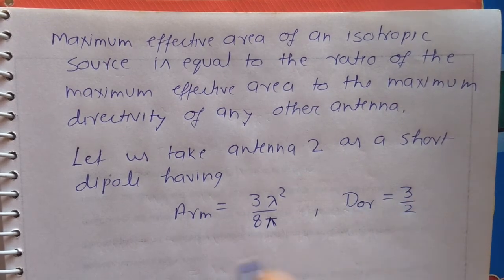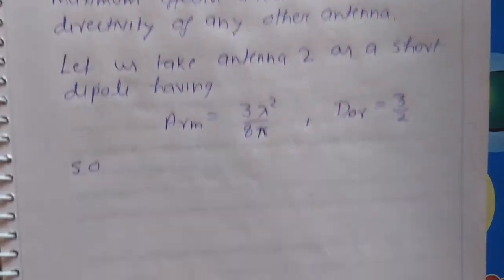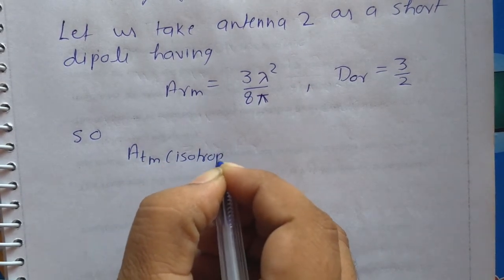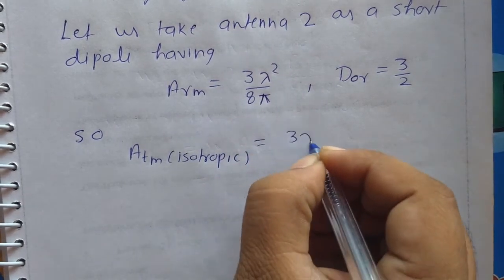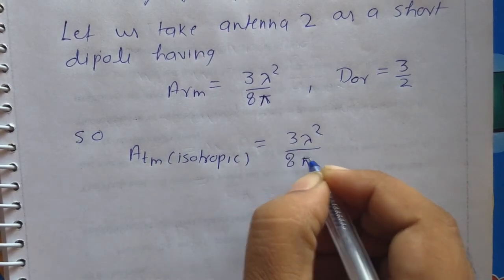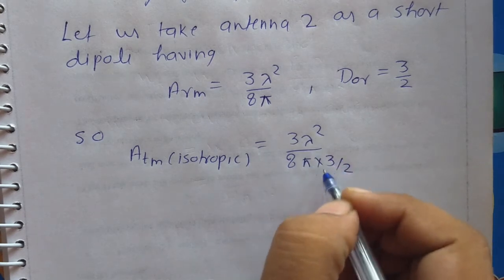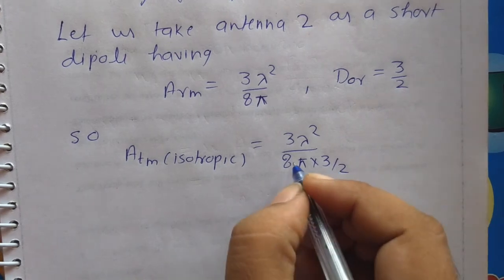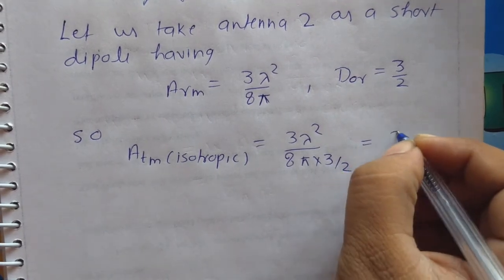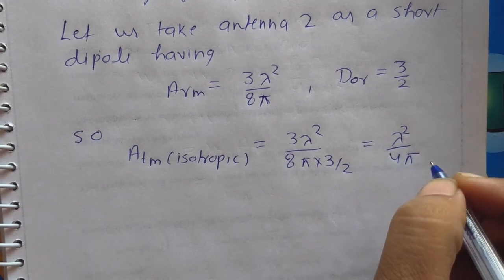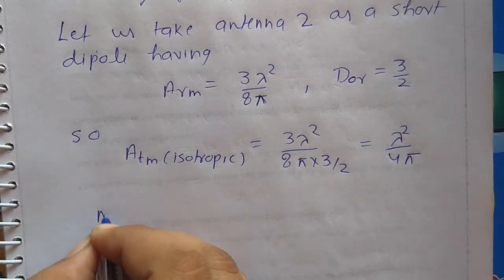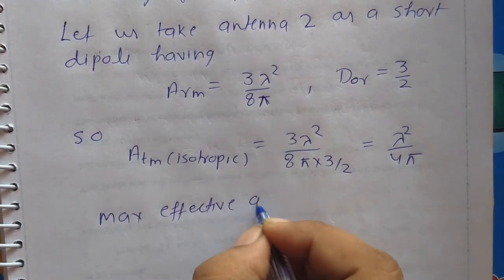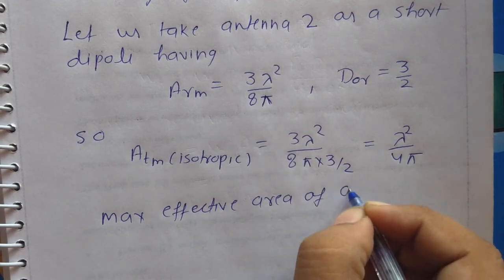So D₀R equal to 3/2. Therefore ATM of the isotropic source is equal to ARM divided by D₀R, which is 3λ²/8π divided by 3/2. That is equal to λ² divided by 4π. So the maximum effective area of the isotropic source equals λ²/4π.